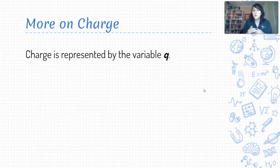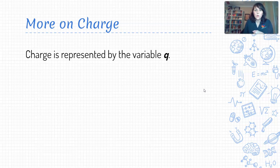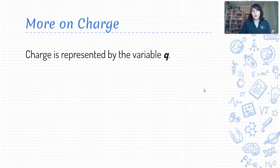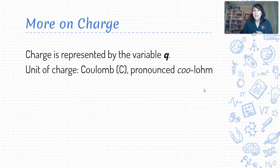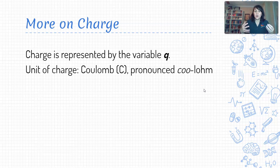As we get more into the mathematical side of things and start looking at equations, we'll see that charge is represented by the variable Q. So if you see Q, that means charge. Our unit of charge — this is a new unit for us — it's called a Coulomb. So we measure charge in Coulombs.